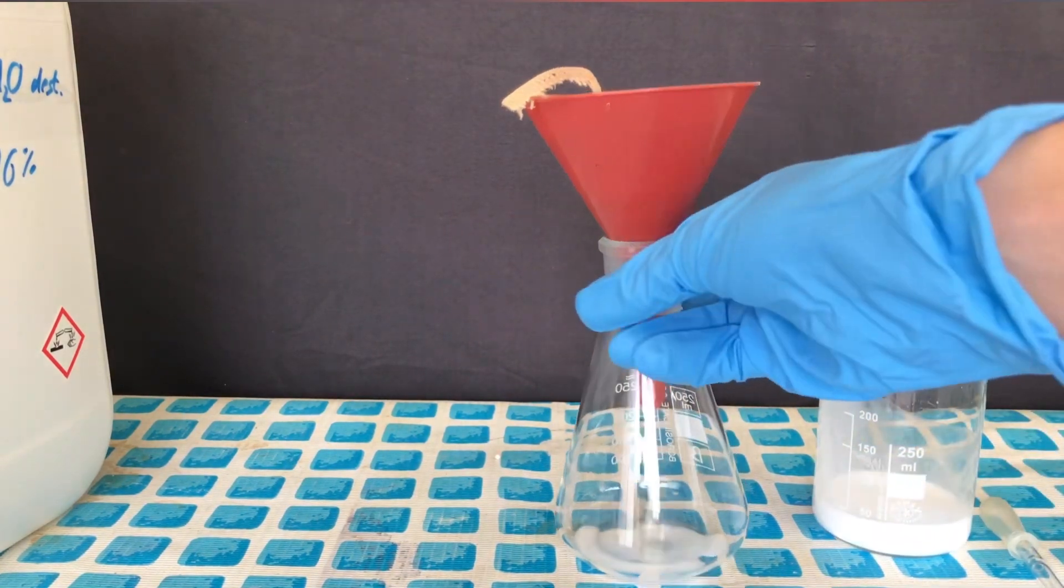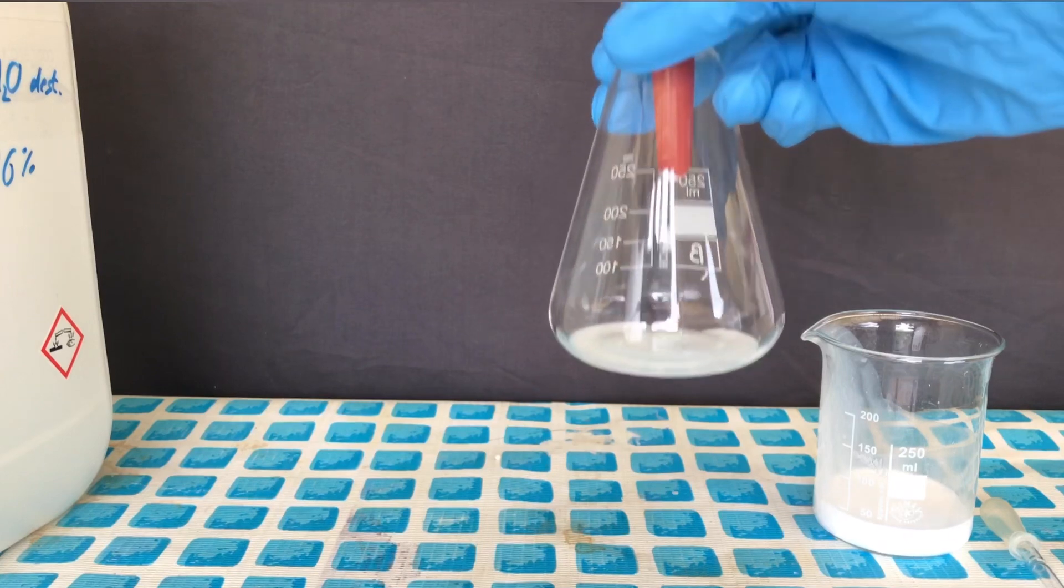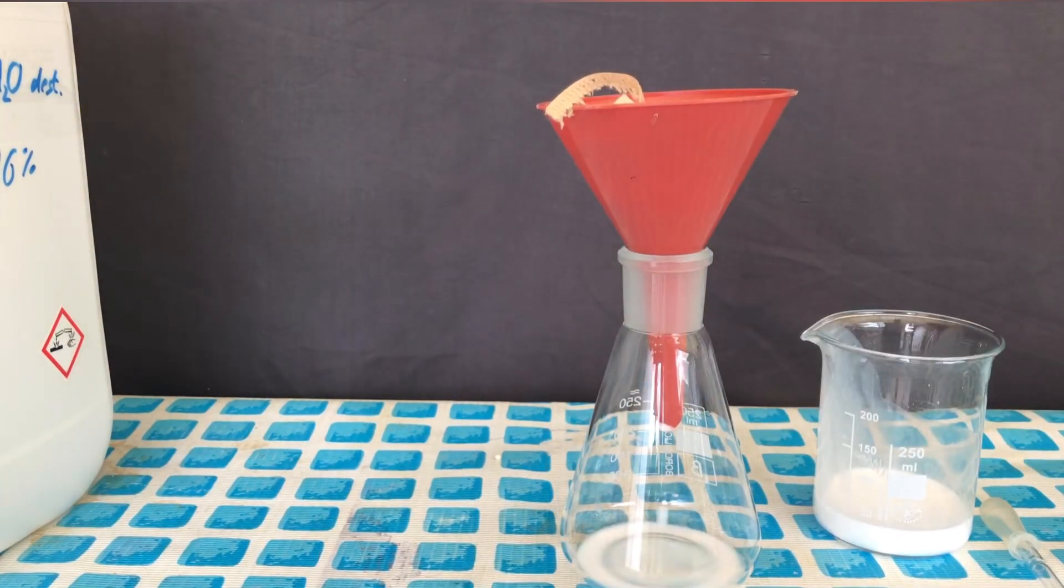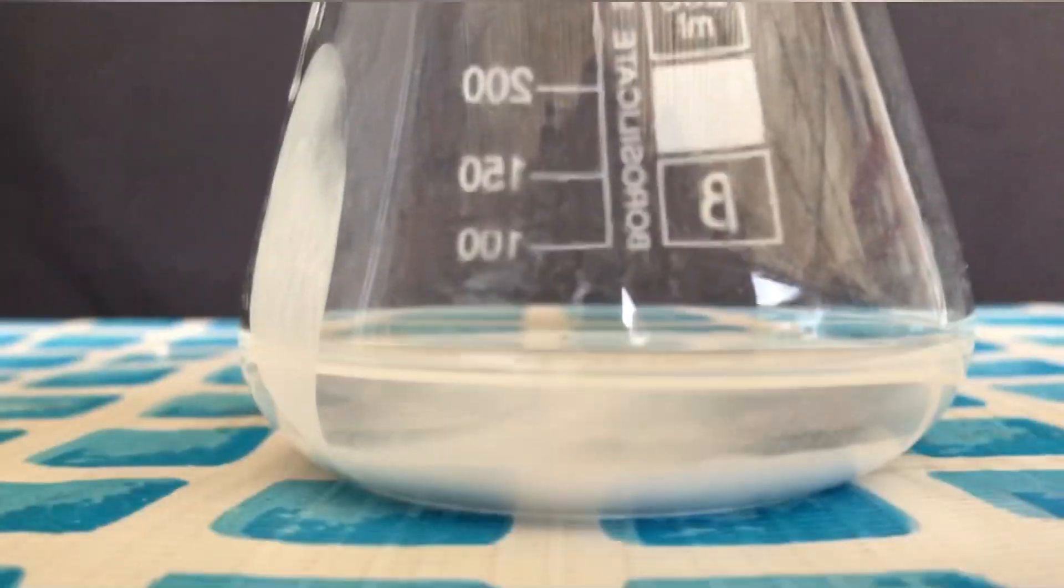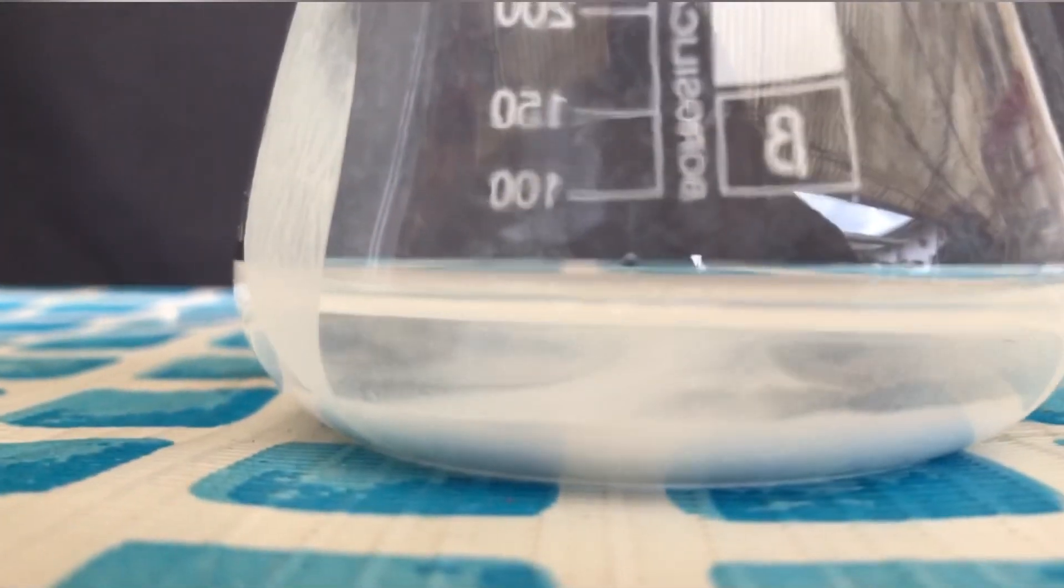We tried to get rid of the barium sulfate by performing a gravity filtration, but as you can see, it passed right through the filter. Fortunately, the barium sulfate collected at the bottom of the Erlenmeyer flask.